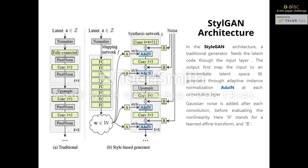In StyleGAN architecture, the traditional generator feeds the latent code through the input layer. The output is first mapped to an intermediate latent space. The mapping network's goal is to encode the input vector into an intermediate vector whose different elements control different visual features. However, the model still must follow the probability density of the training data, which means if images of people with black hair are more common in the dataset, then more input values will be mapped to that feature. To solve this issue, another neural network is employed so the model can generate a vector that doesn't have to follow the training data distribution, and can reduce the correlation between features by using adaptive instance normalization at each convolutional layer.